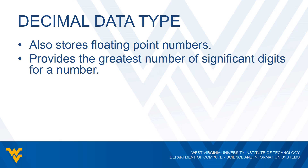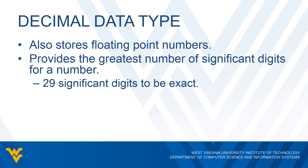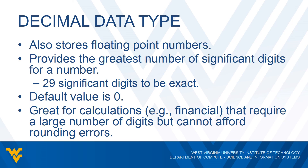The decimal data type is actually something very different from other programming languages — in fact, it does not exist in most other languages. It does store floating point numbers, just like doubles, but the difference is it provides the greatest number of significant digits. Specifically, it stores 29 significant digits, compared to a double which stores around seven or eight, depending on the programming language. Just like doubles, the default value is zero. This data type is great when we need more accuracy with a large number of digits and can't afford any rounding — for example, doing financial computations would be a really good use case for the decimal data type.